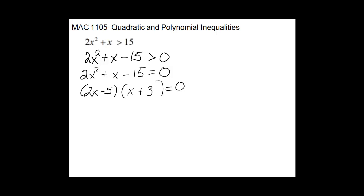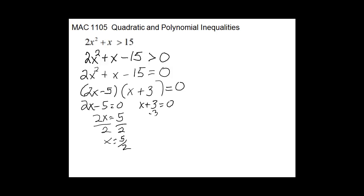Set each piece equal to 0. For 2x minus 5 equals 0: add 5 to both sides and divide by 2, so x equals 5 halves. For x plus 3 equals 0: subtract 3, so x equals negative 3. So we have our number line with negative 3 and 5 halves marked.